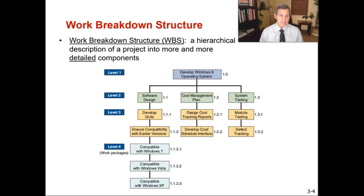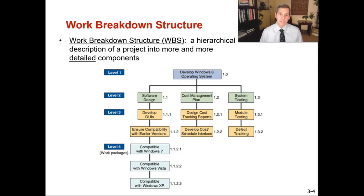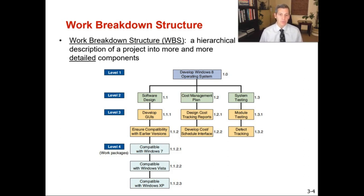One key step in the project planning phase is to create a work breakdown structure, which is a hierarchical description of a project broken into more and more detailed components. Level one is the big picture project; level two contains the major tasks; level three covers everything needed to complete level two. For example, developing the Windows 8 operating system is the level one objective, with software design, cost management plan, and system testing as level two tasks. Higher-level tasks are typically performed by a team, while lower-level tasks are completed by individuals.